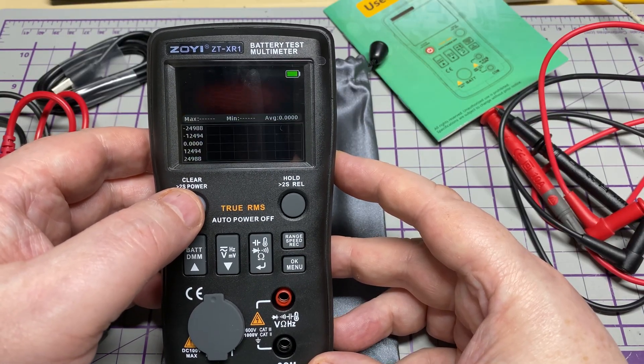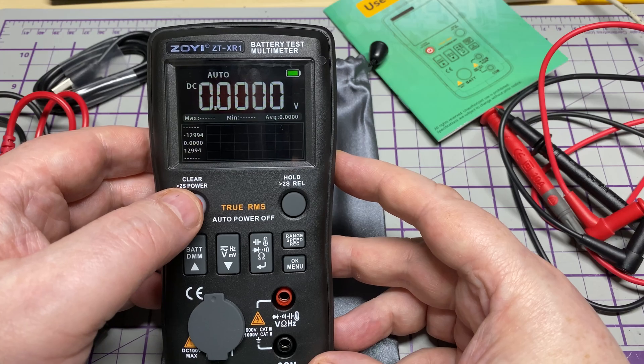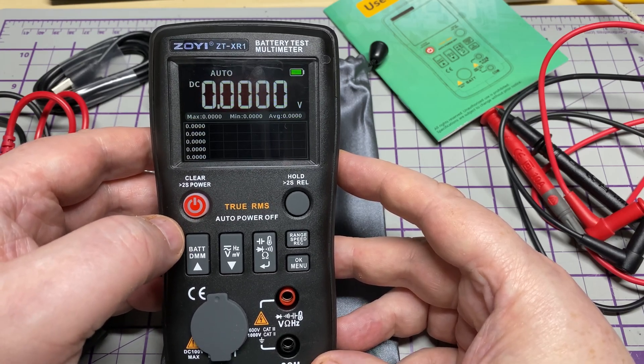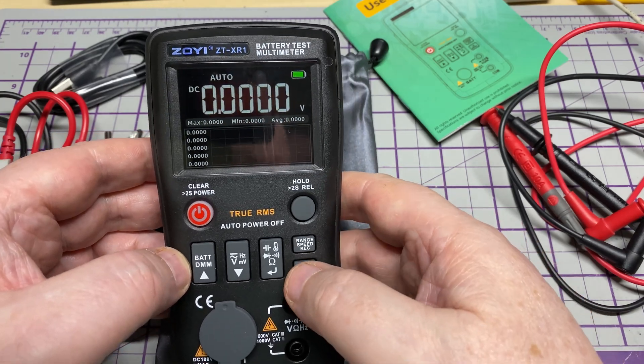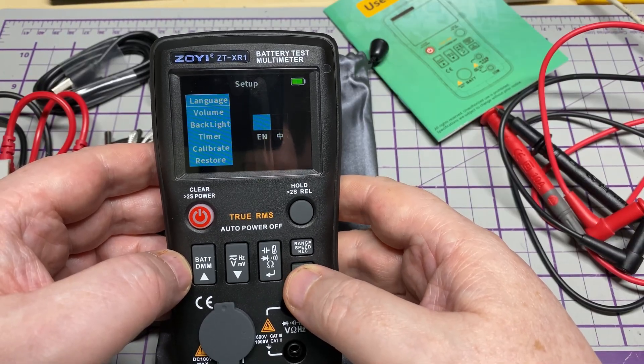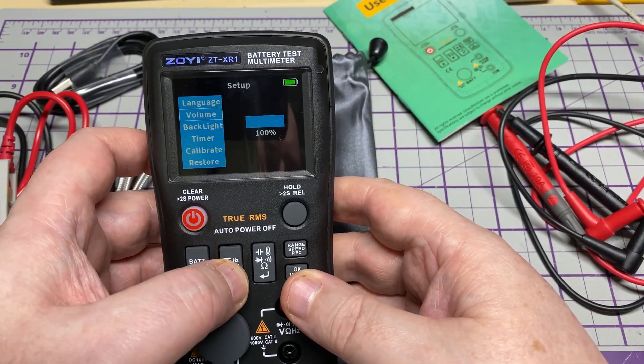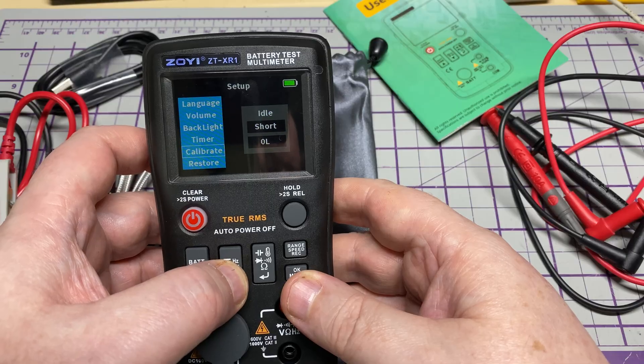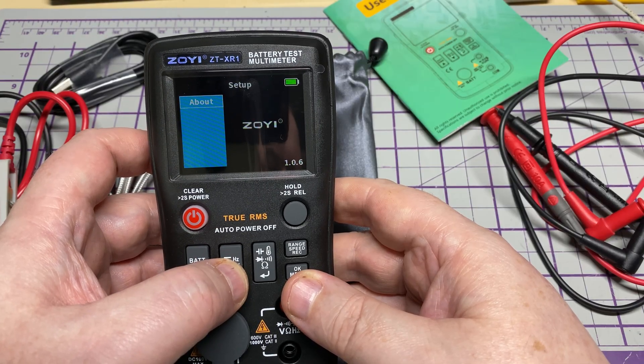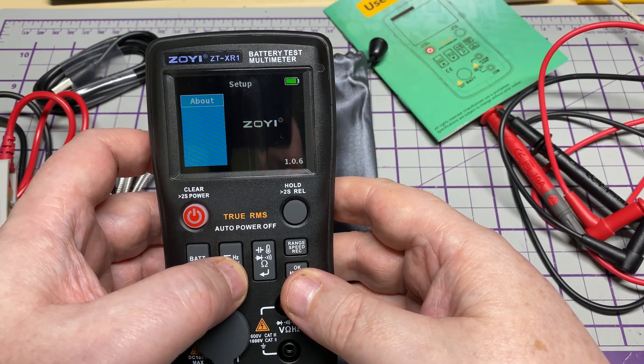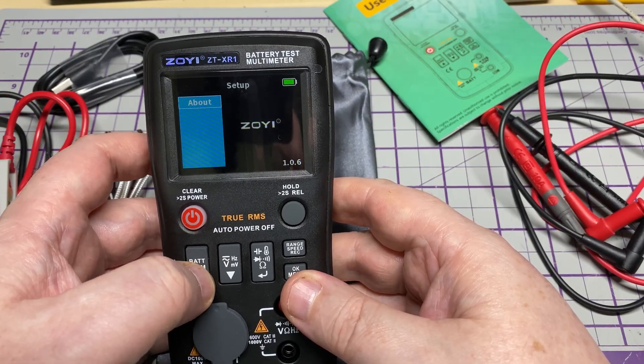Press and hold the power button. We get greeted with the DC volts screen. Everything looks sharp as you would expect. Quick look through the menu.